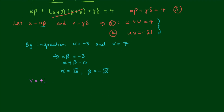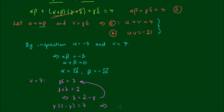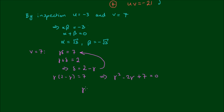With v equals 7, gamma·delta equals 7 and gamma plus delta equals 2. Writing delta equals 2 minus gamma and substituting gives gamma(2 minus gamma) equals 7, which expands to the quadratic gamma squared minus 2·gamma plus 7 equals 0. Using the quadratic formula, gamma equals 1 plus or minus i times the square root of 6. We don't need to solve for delta separately since substituting gives the same result.